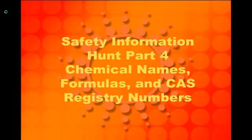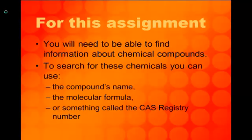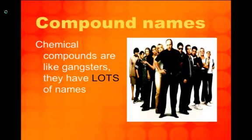Safety Information Hunt Part 4: Finding chemical information with the compound name, CAS registry number, or chemical formula. For this assignment, you will need to find information about chemical compounds by looking for them in various ways. You can use the compound's name, the molecular formula, or something called the CAS registry number. Chemical compounds are similar to gangsters and mobsters — they have a lot of names: common names, chemical names, uncommon names, product names, and more.